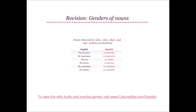Nouns that end in -sión, -ción, -dad, -dud, or -umbre are feminine. Here are some examples: the television translates to la televisión; the inspiration will be la inspiración; the city becomes la ciudad; the liberty is la libertad; the magnitude is translated as la magnitud; the custom becomes la costumbre. All of these nouns are feminine.